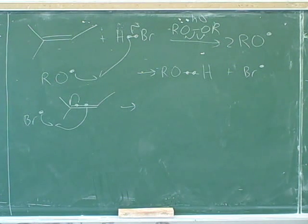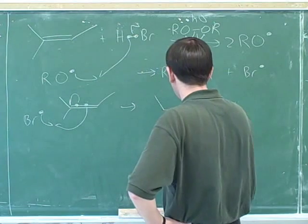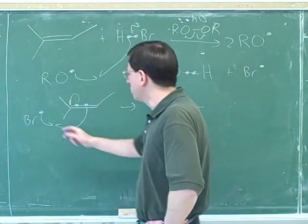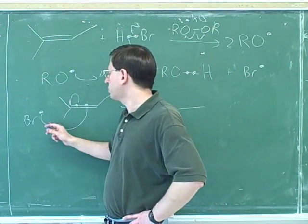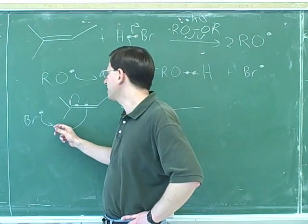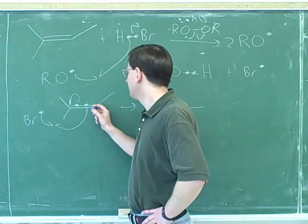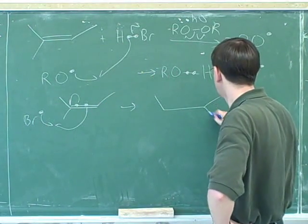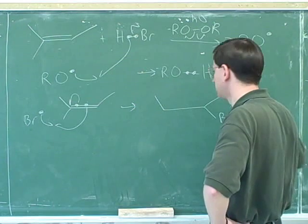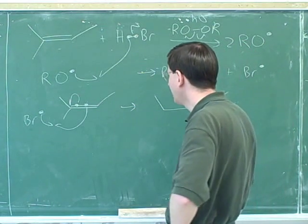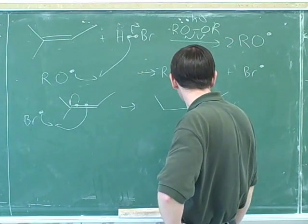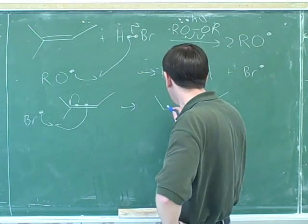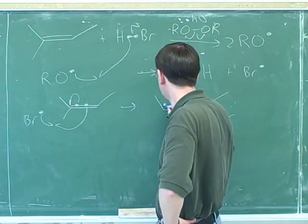Now this indicates that the bromine is forming a bond with this carbon. So we should draw that bromine over there. So remember that when you have two arrows pointing towards each other in a radical mechanism, that indicates the formation of a new bond. And who's forming the bond? This carbon over here and this bromine.